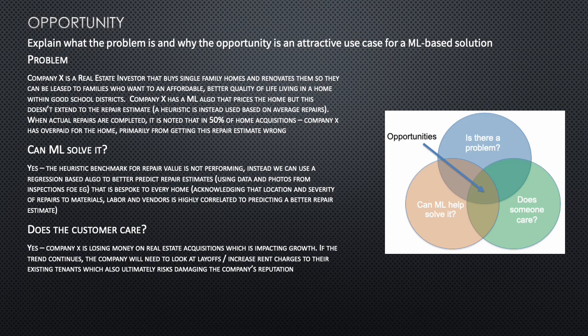Currently they're using a heuristic — average repair values — as their estimate. When actual repairs are completed, it's noted that in 50% of home acquisitions, Company X is overpaying for the home, primarily because they're getting the repair estimate wrong. So we have a problem here — can machine learning solve it?